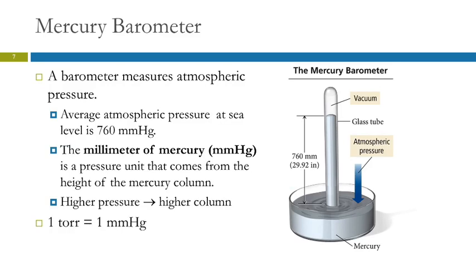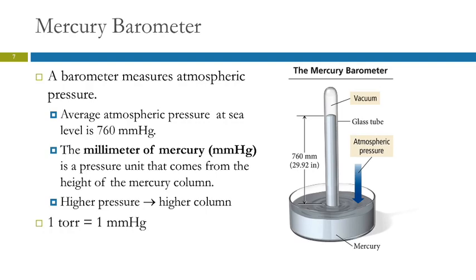When the weatherman says the atmospheric pressure today is 29.82, he means inches of mercury, referring to the height of a column of mercury. They made a unit called the torr in honor of Torricelli, who invented the barometer. One torr is exactly the same as a millimeter of mercury. Adding the unit torr didn't really simplify anything — it just gave us another unit.